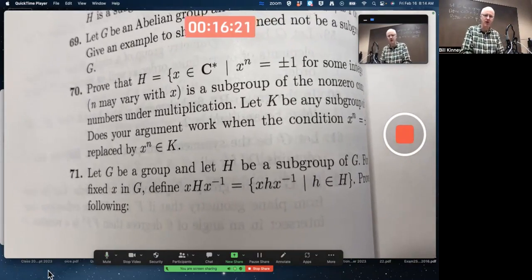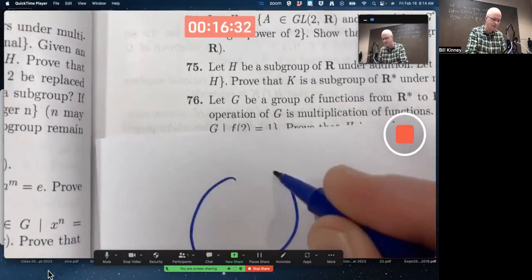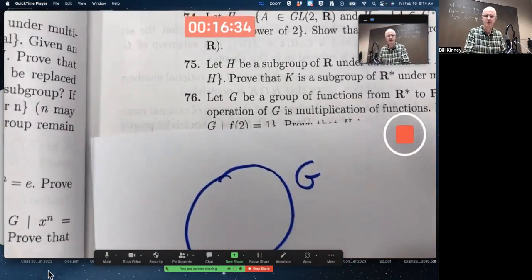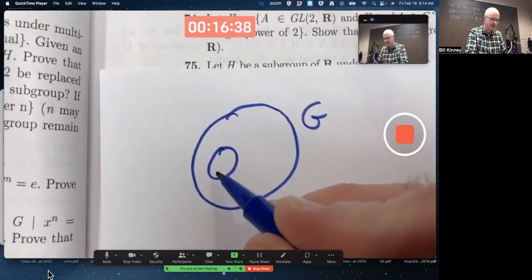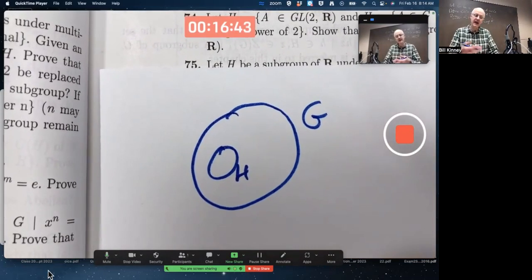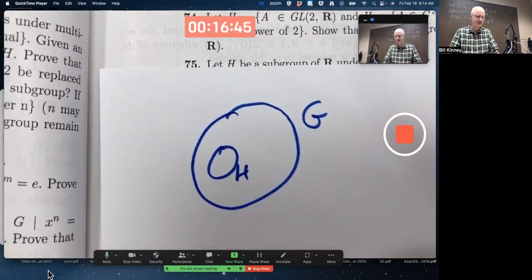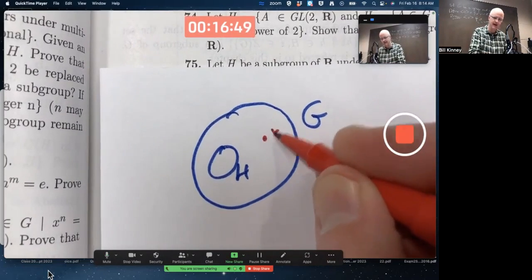You could even start to draw a little diagram here. There's G. There's H. Where is x? X could be in H. It could be outside of H. In general, it's outside of H. Maybe this is x.